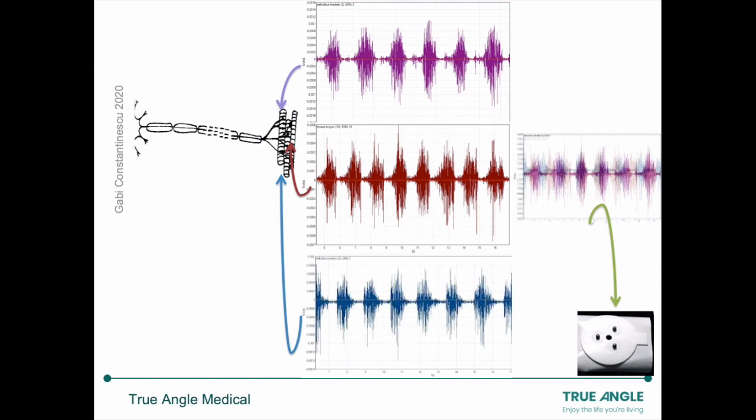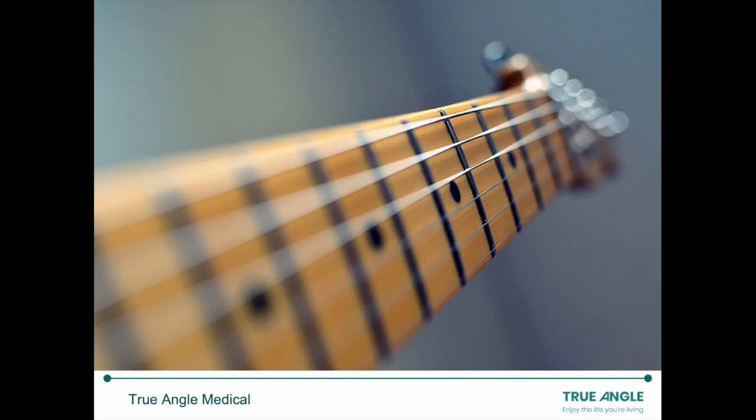So if we think of each muscle fiber as a string on the guitar, each string has its own characteristic waveform. But what we're detecting is a sum of many strings together.